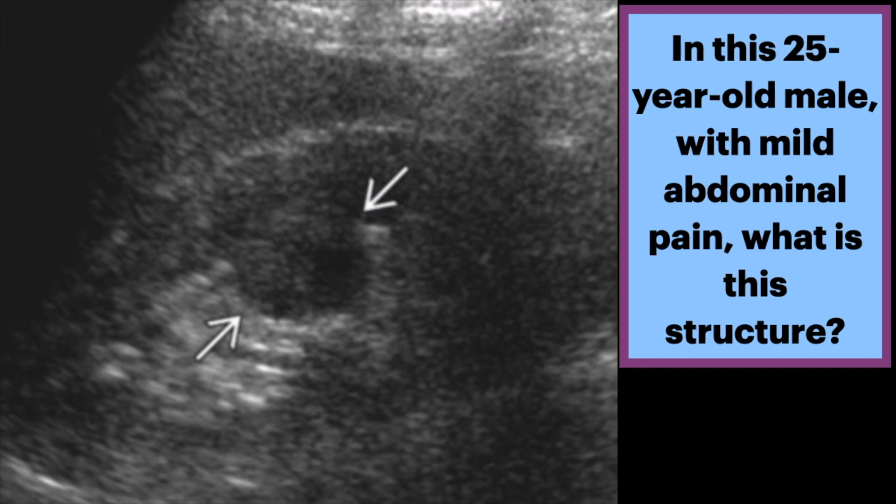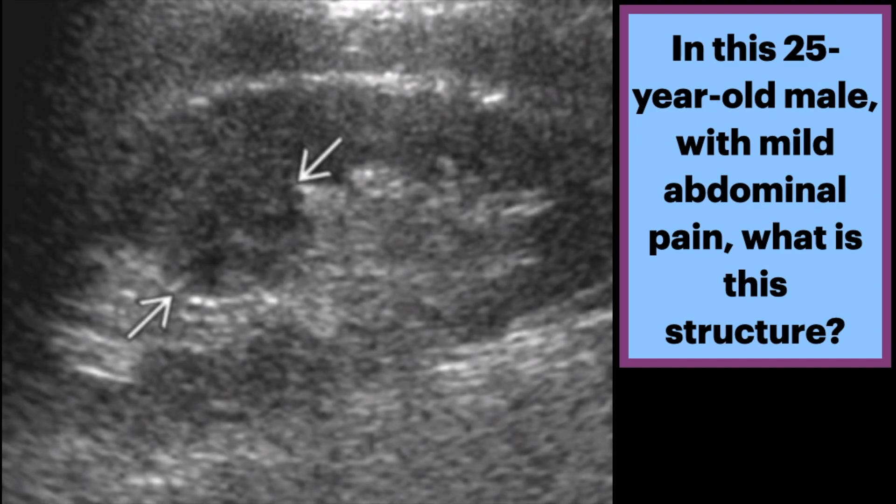Longitudinal grayscale ultrasound of the kidney shows focal cortical hyperplasia, which is isoechoic and continuous with the adjacent cortex, and indents the renal sinus.